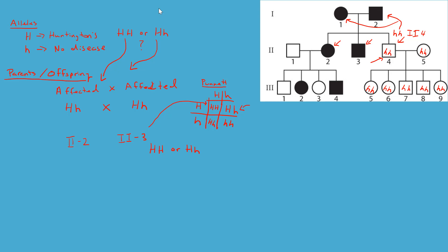Can we see offspring for 2-2? Yes. Little h, little h — all unaffected offspring. Therefore that parent had to contribute a little h, meaning 2-2 must be big H, little h. Let's test that out: individual 2-1 is for sure unaffected, and we're going to cross 2-1 with 2-2, assuming 2-2 is big H, little h. Put it into a Punnett square.